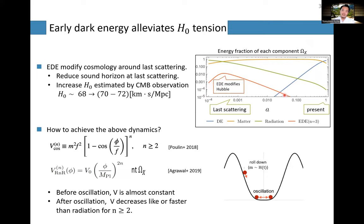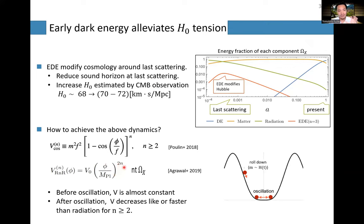By adding this new degree of freedom, you can change the early universe measurement of the Hubble parameter, alleviating the tension with the late-time universe measurement. But to achieve this behavior, we need an unusual potential for the scalar field — something like (1 - cos)^n where n must be ≥ 2, or phi^4 or phi^6. A simple quadratic potential doesn't work, because we want early dark energy to decay as fast as radiation or even faster.